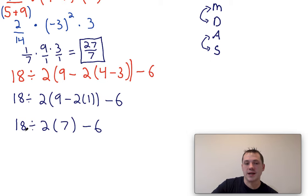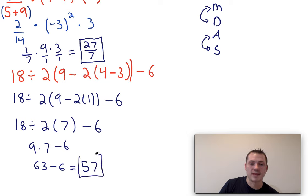So what I would do here is I would first do 18 divided by 2, which is 9, and then I would have to do 9 times 7, which is 63, and then I would have to subtract 6, which is going to give me 57, and that would be my final answer.